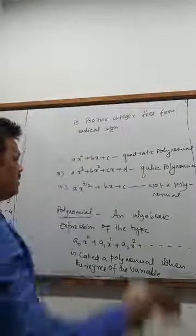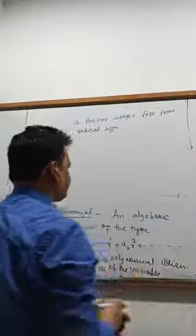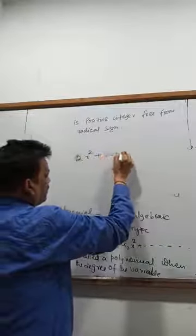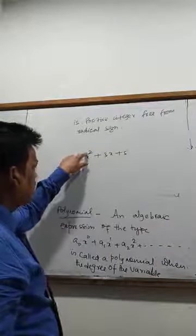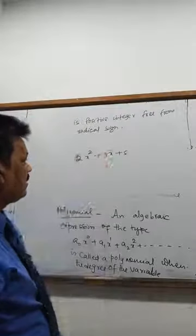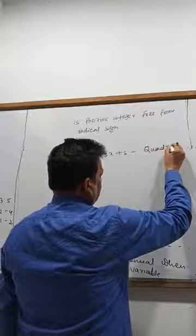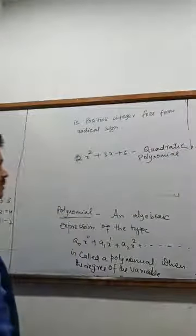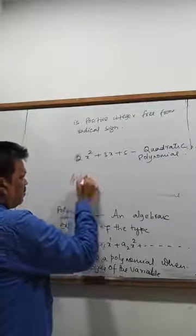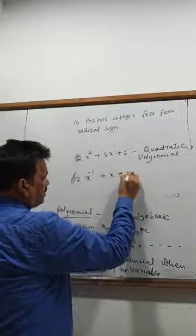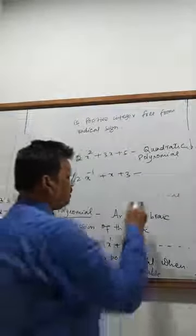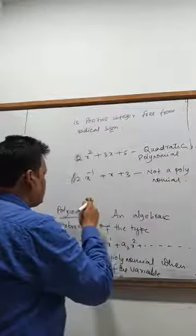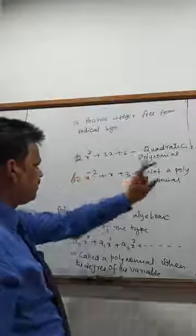Let's discuss in detail what this means. If I write 2x square plus 3x plus 5, the highest degree you find is 2, and the degree of the next term is 1, which is not negative. This is a quadratic polynomial. But if I write 2x to the power minus 1 plus x plus 3, the degree is negative, so it is not a polynomial.